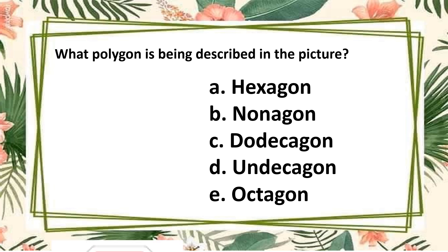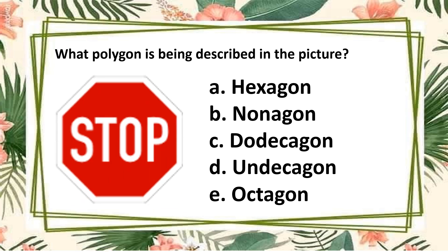Last picture — let us count the number of sides of this polygon: one, two, three, four, five, six, seven, eight. This polygon has eight sides. The answer is octagon. Very good.